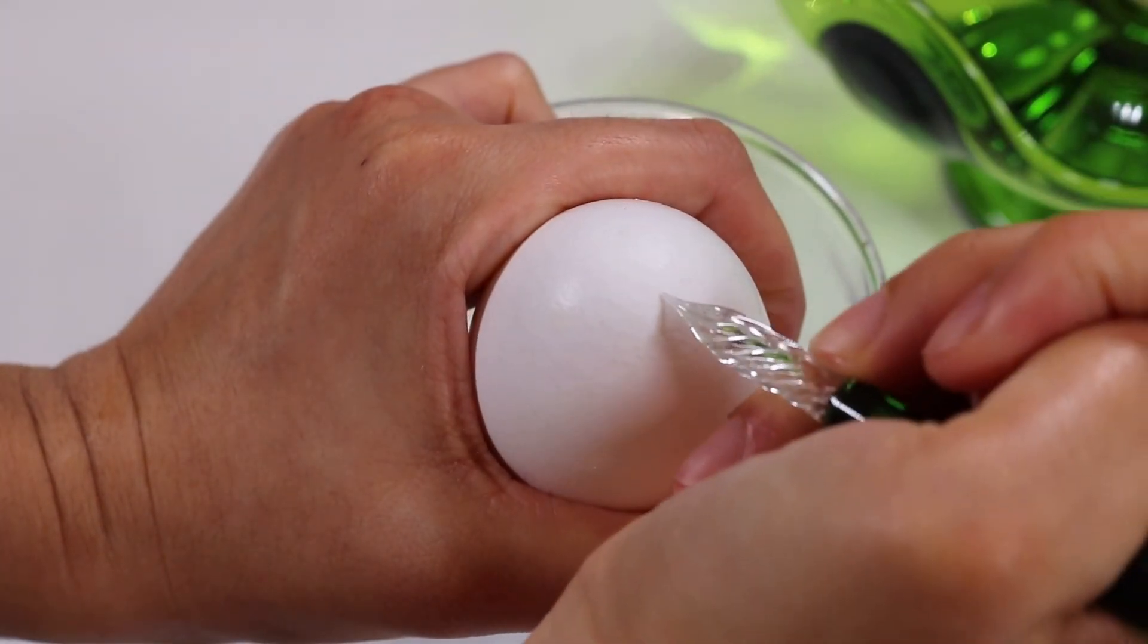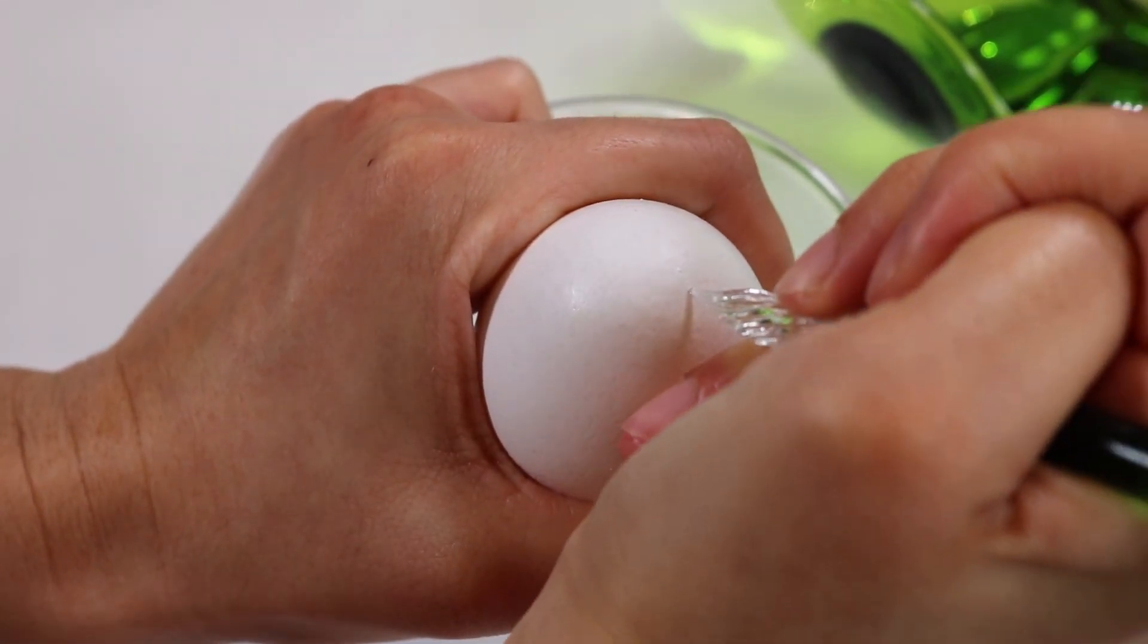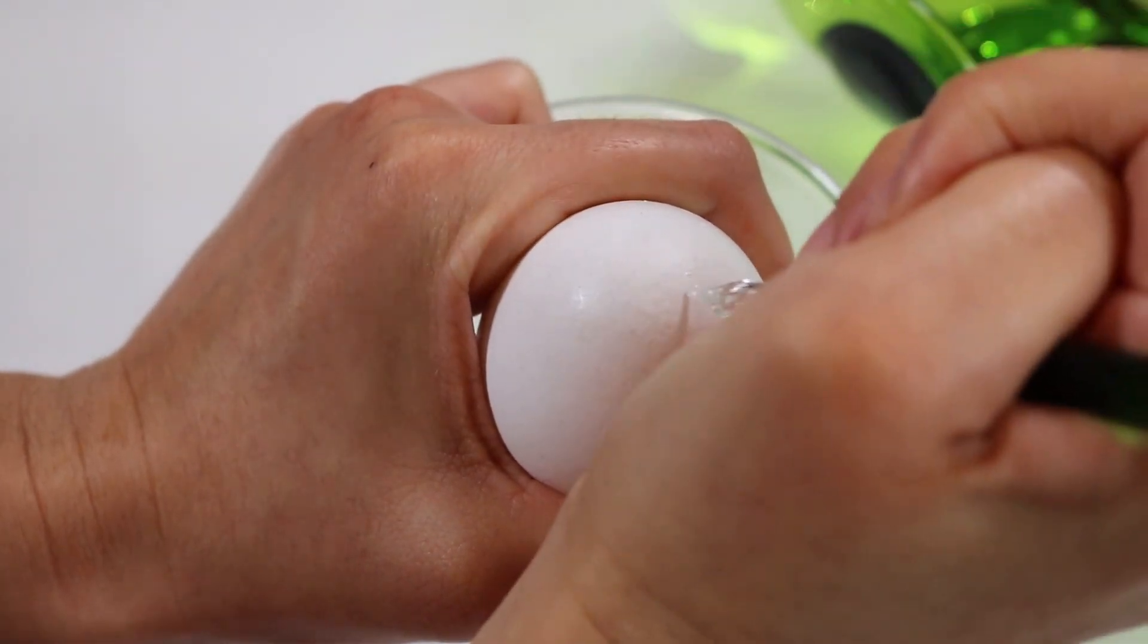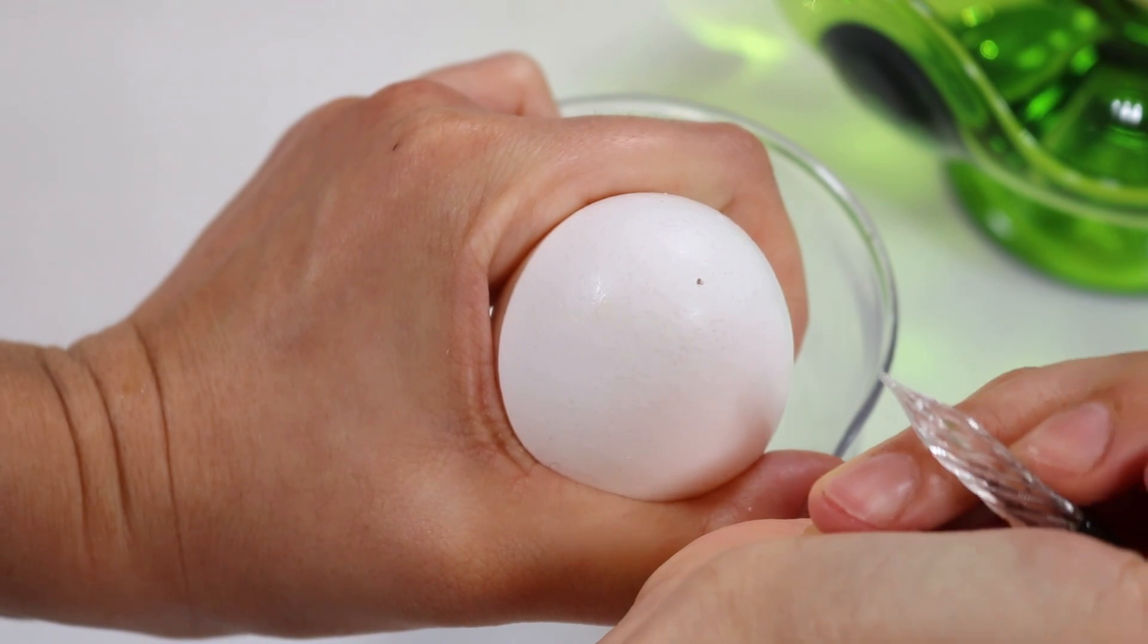The first thing that you're going to want to do is have your pointed object. So either what I'm using or a ballpoint pen or needle, whatever you're using. And you're going to want to poke the top of the egg and kind of chip away at the shell.